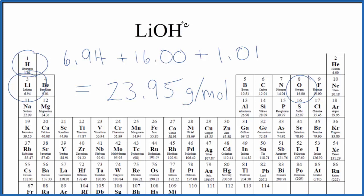That means if we have one mole of LiOH, the lithium hydroxide, it'll have a mass of 23.95 grams. Note that my periodic table goes out to two decimal places.